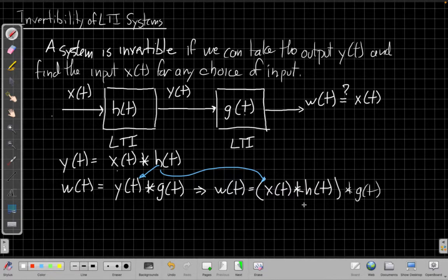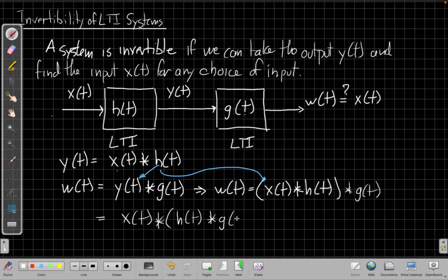So I can use the associative property of convolution now to simplify this further and say, well, I can switch the parentheses around because of the associative property to be like this. And so if I want w(t) to be equal to x(t), I need this